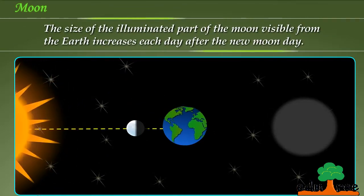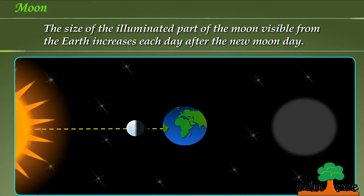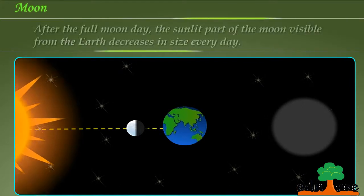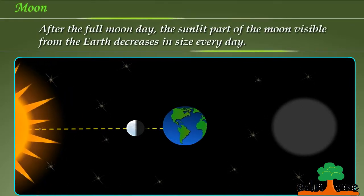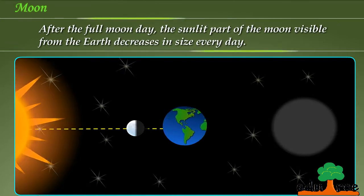The size of the illuminated part of the moon visible from the earth increases each day after the new moon day. After the full moon day, the sunlit part of the moon visible from the earth decreases in size everyday.